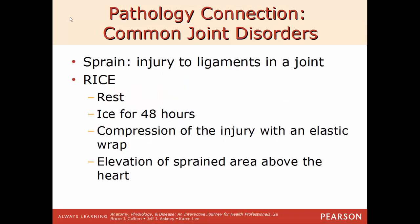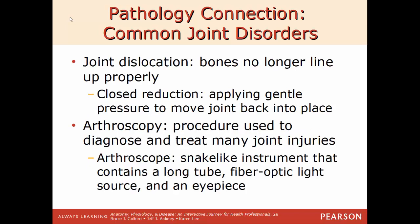A sprain is an injury to a ligament in the joint. A common way to treat this is RICE — Rest, Ice for 48 hours, Compression of the injury with an ACE bandage, and Elevation of the sprained area above the heart. A joint dislocation is where bones are no longer lined up properly; treatment involves a closed reduction where gentle pressure puts the joint back. Arthroscopy is a procedure used to diagnose and treat various joint injuries using an arthroscope — a stiff instrument with a long flexible tube, a light on the end, and an eyepiece on the other.